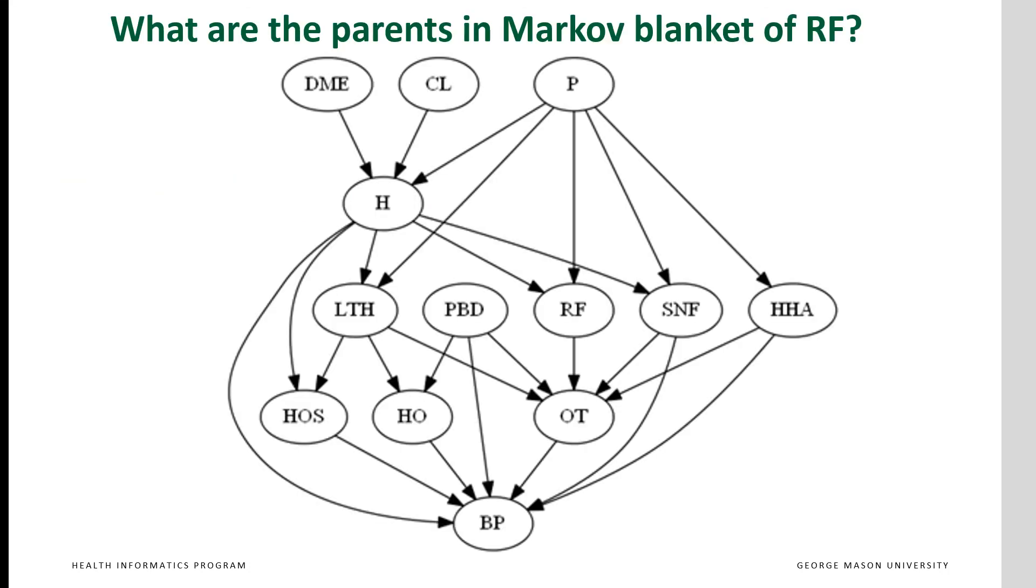Let's go through an example. This is a network. Let us first familiarize ourselves with the concept of parents in the network. For each node, there are the nodes that precede it and are connected to it with the directed arc. So what are the parents in the Markov blanket of the variable RF?